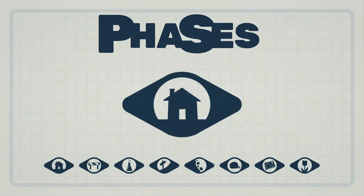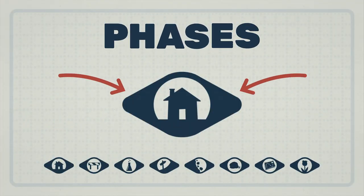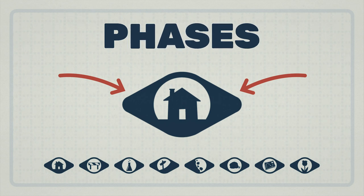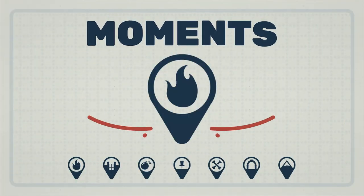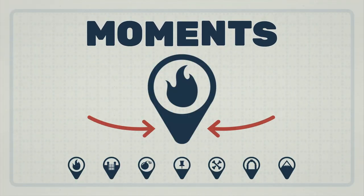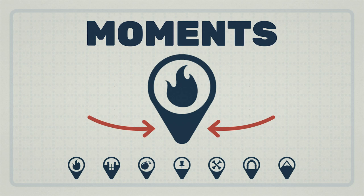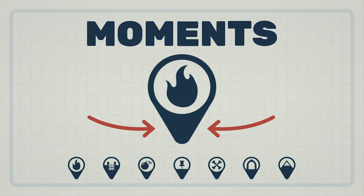The symbols for phases and moments are slightly different and help you remember which is which. The phases have arrows pointing out from both sides, which you can imagine means that they span multiple scenes or locations and bridge the gaps between moments, which have one single arrow pointing down, helping you remember they usually last one scene in one location.